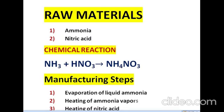Raw materials: The first is ammonia, and the second is nitric acid. According to the chemical reaction, NH3 and HNO3 react in the vapor phase. The hydrogen of HNO3 shifts to NH3, giving the product NH4NO3. It is an easy reaction to remember.